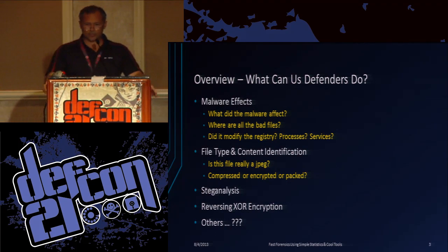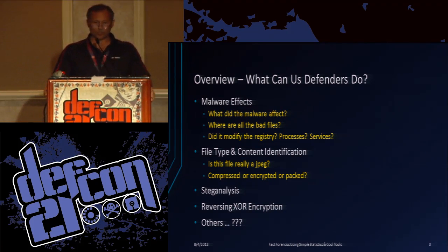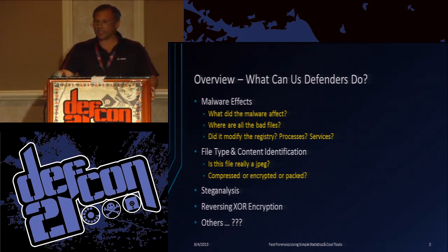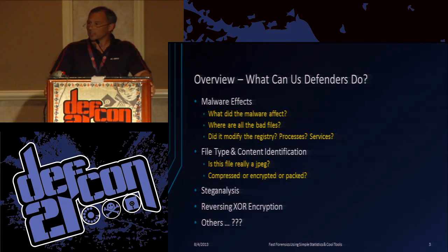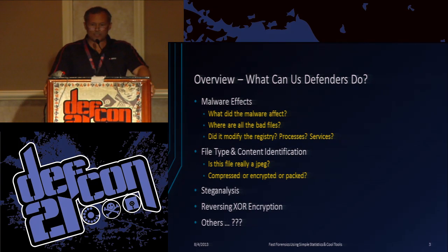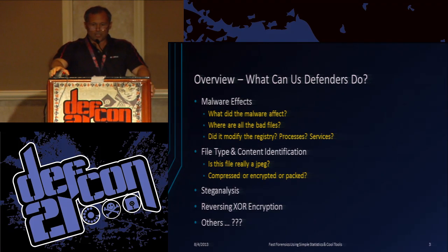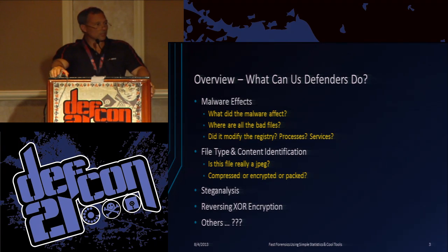So what can us defenders do? Sometimes you've had malware attack your system before. It does stuff, right? It drops files, changes registry keys, things like that. You want to know what happened. Another useful topic we'll talk about today is file content type identification. Just because a file has an extension doesn't mean that's what it is. We'll look a little deeper than just looking at the magic numbers. A little bit of steg analysis, a little bit of reversing XOR encryption. There's lots of uses for these various tools.